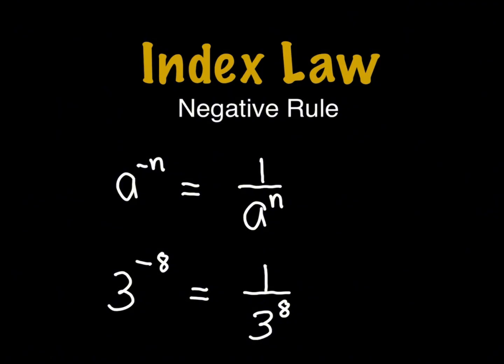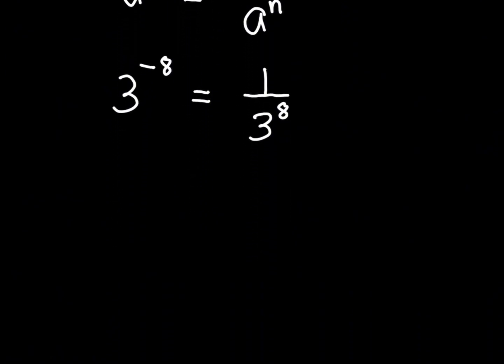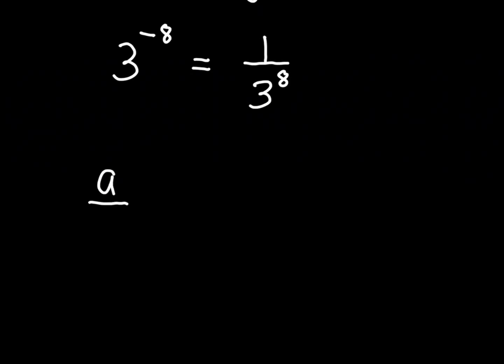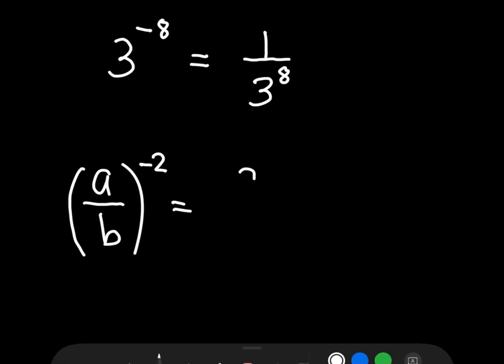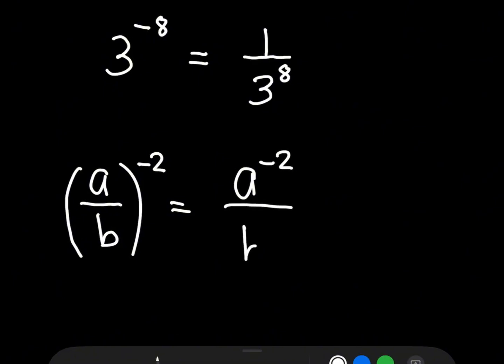Okay, let's have another example. So let's say we have a over b raised to negative 2. So this is the same as a negative 2 over b negative 2. So all you have to do to simplify this problem is you swap or get the reciprocal of a negative 2 and b negative 2.